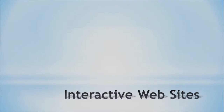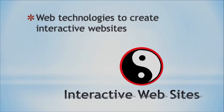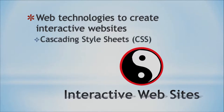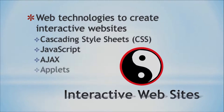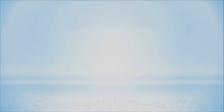So we're talking about interaction, interactive websites, and the technologies we'll use to make these kinds of websites. One is Cascading Style Sheets, also called Style Sheets, and JavaScript, Ajax, and we also have Applets and Mobile Browsers. We'll dive into each of these with more details, but right there we're just giving you a list of what we're going to talk about.